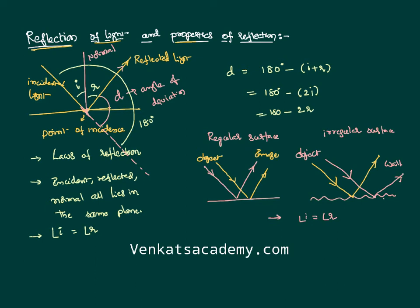We will further discuss in the next lesson how the deviation 180 − 2i is derived and how an image is formed by reflection. Reflection of light can be studied in two parts: reflection at a plane surface and reflection at a curved surface. We will start with reflection at a plane surface and continue in the next video lesson. Thank you for tuning in.